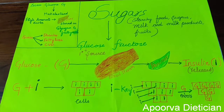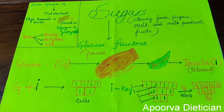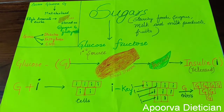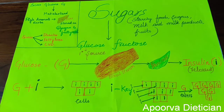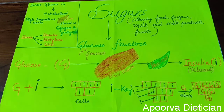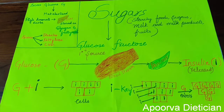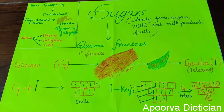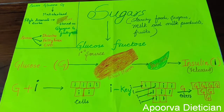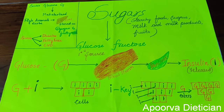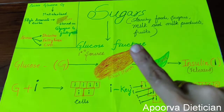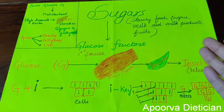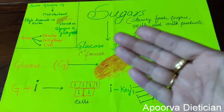Hi guys, this is Apoorva here, and today I have come up with another interesting topic — sugars. Let's understand what sugars are, how dangerous they are for our body, or how useful they are. When I'm talking about sugars, I'm not talking about the white or brown sugar you add in teas, coffees, or sweets. I'm generally talking about sugars, which are glucose and fructose, along with various other forms.